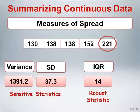As a result, both the variance and standard deviation, like the mean, are referred to as sensitive statistics. The IQR, like the median, is referred to as a robust statistic.